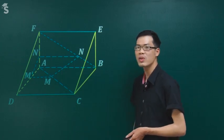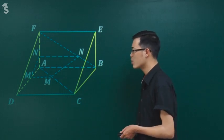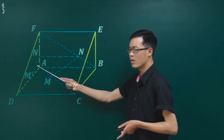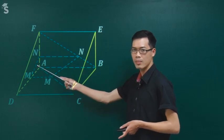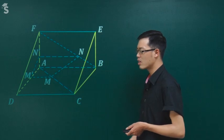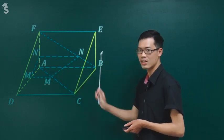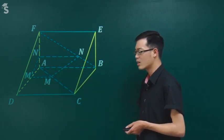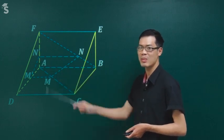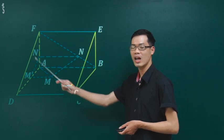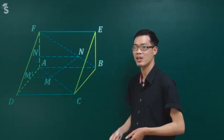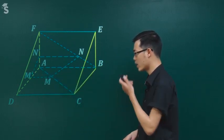Chứng minh hai mặt song song thì một lần nữa nhắc lại: chúng ta sẽ cố gắng rút ra hai đường cắt nhau trong mặt này, chứng minh chúng song song mặt kia là được. Hoặc là tìm ra hai cặp song song đối ứng: a song song a', b song song b', trong đó a cắt b và a' cắt b', lần lượt là hai đường trong hai mặt.